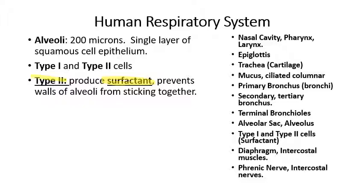If you put a little bit of soap into water inside a wet balloon, that will lower the surface tension holding the walls together so you can blow it up more easily. Similarly, the surfactant prevents the walls of the alveoli from sticking together by adding a protein-rich liquid. Every now and then when you exhale, the walls of the alveoli can get stuck together due to elastic recoil. The surfactant prevents the walls from sticking together and makes it much easier to re-inflate the alveolar sac.